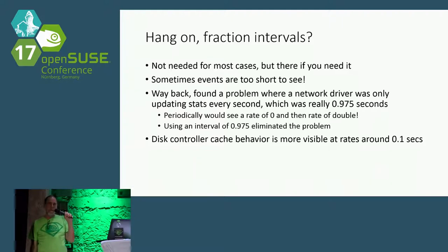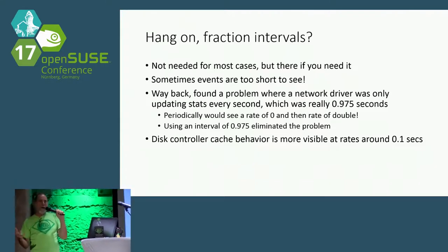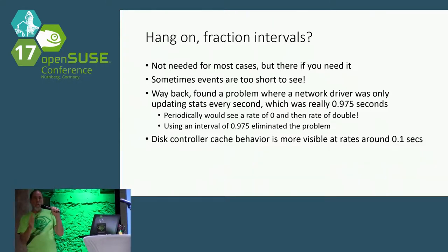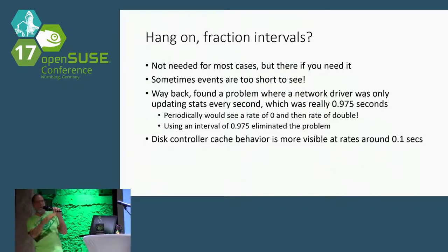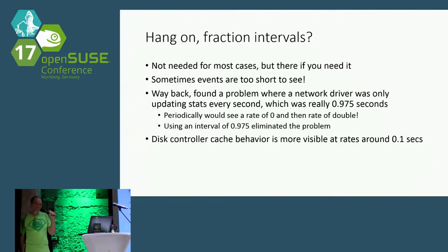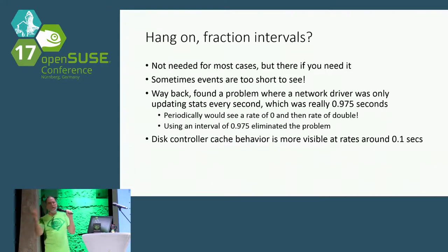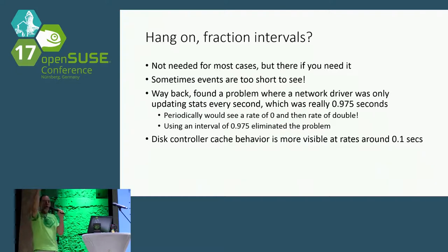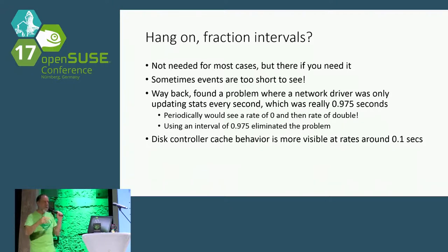If you're looking at the counters once a second, and the fact that the clocks in Linux don't go by exactly a second — because it's really a binary number of jiffies and they just don't line up to a second — if you were looking at network statistics, you might see 100, 100, 100, 100, 0, 200, 100, 100, 0, 200 and it was like, what the hell is going on? It all had to do with this granularity.